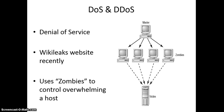Distributed denial-of-service attacks and denial-of-service attacks were mentioned before. One example I always give is the WikiLeaks website being overwhelmed when Julian Assange wanted to leak information about the U.S. government. Denial-of-service attacks typically occur when somebody wants to overwhelm a system, and you can do that using the botnet and zombies with the agents running on them that we discussed.